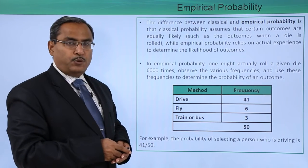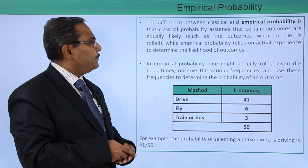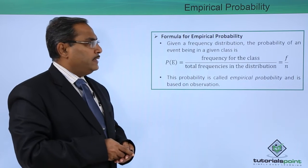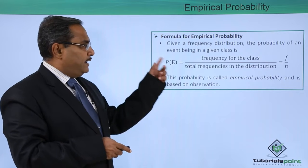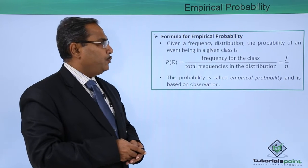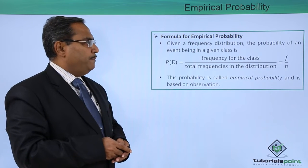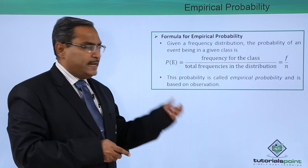In this way, the empirical probability can be defined in this example. Formula for empirical probability: given a frequency distribution, the probability of an event being in a given class is...